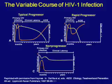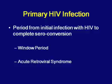Primary infection is the period from initial infection to complete seroconversion. It includes two categories: the window period and acute retroviral syndrome. The window period is a time during which a recently infected person will have a negative HIV test — it could be up to 6 months — and is associated with very high viral load. Condom use is required and retesting is necessary, as transmission risk is very high.